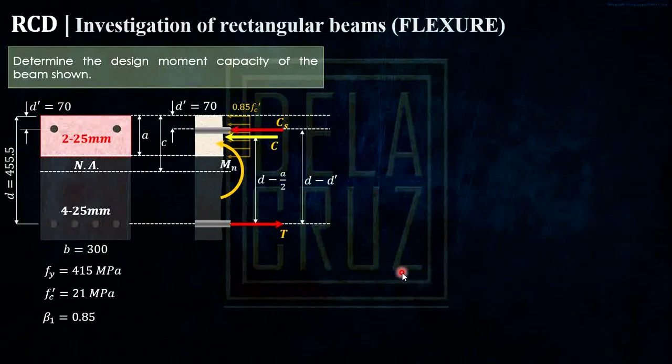Now, we will define these forces. This is the nominal moment. That force T is just AS times FS, or stress times area. Again, this is what I repeat from my previous videos. Para mas matandaan nyo talaga. And again, this is the compression of the concrete. This stress is 0.85 FC prime. And the area is A times B. And the compression of the steel is stress times area. So stress is FS prime. And the area is called AS prime for compression.